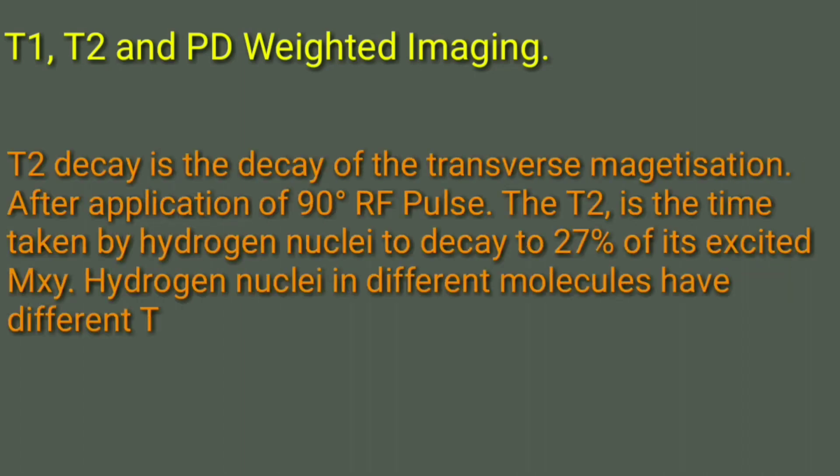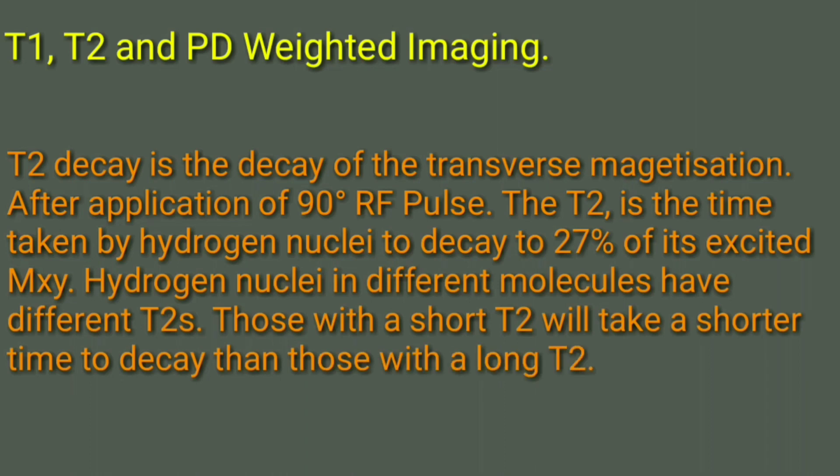T2 decay is the decay of transverse magnetization after application of 90 degree RF pulse. The T2 is the time taken by hydrogen nuclei to decay to 27% of its excited Mxy. The hydrogen nuclei in different molecules have different T2s. Those with a shorter T2 will take a shorter time to decay than those with a longer T2.